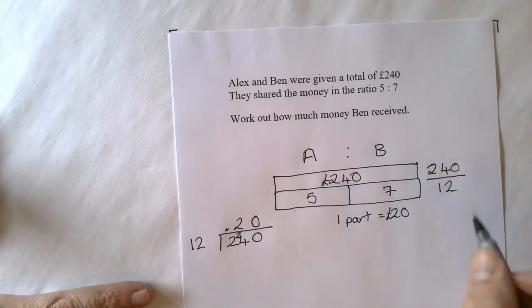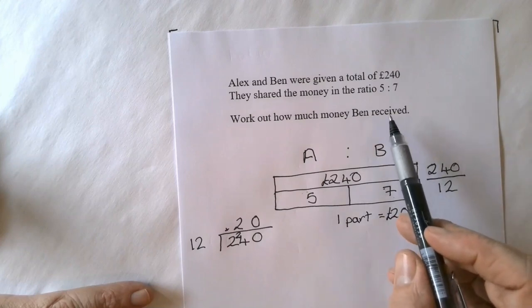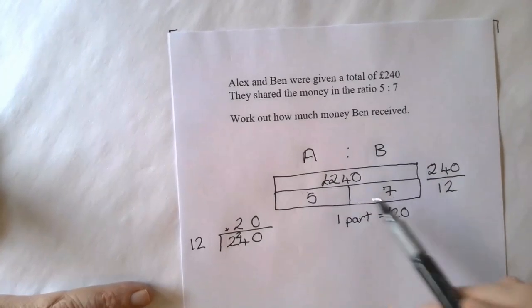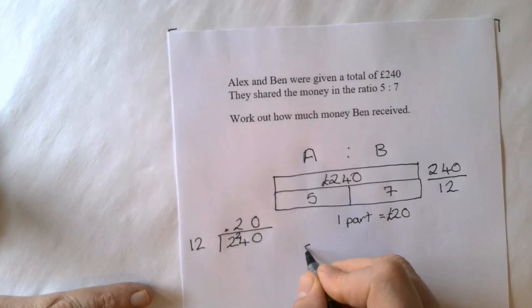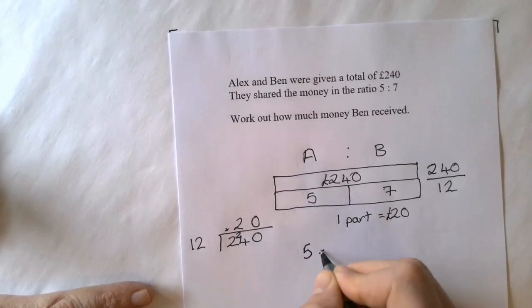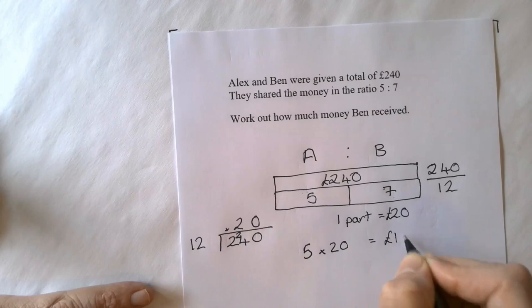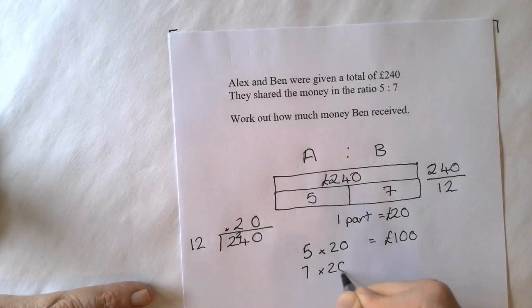If you ask how much Ben received, what's worthwhile doing at this minute is to do both parts of the ratio to check that it will add up to 240. So Alex gets 5 multiplied by 20, which gives him £100. And Ben does 7 multiplied by 20, which gives him £140.